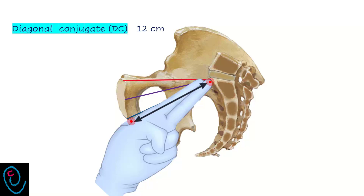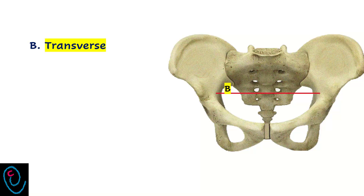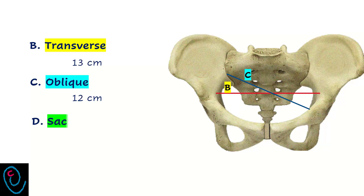The diagonal conjugate can also predict other diameters: the true conjugate is the diagonal minus 1 cm, while the obstetric conjugate is the diagonal minus 2 cm. The transverse diameter of the pelvic inlet is the distance between the two farthest points over the iliopectineal line and measures 13 cm. The oblique diameter extends from one sacroiliac joint to the opposite iliopubic eminence and measures 12 cm. The sacrocotyloid diameter is the distance between the midpoint of the sacral promontory and the iliopubic eminence.